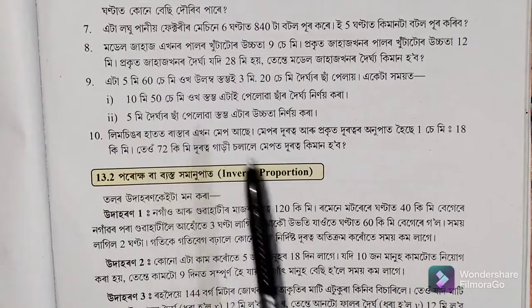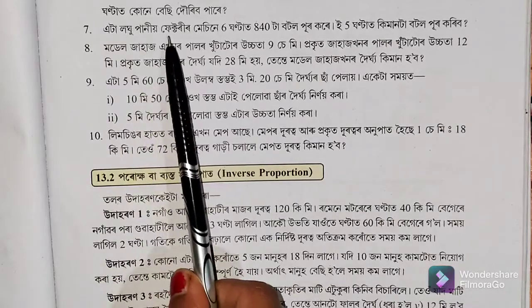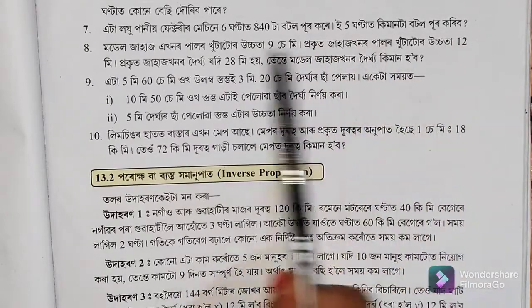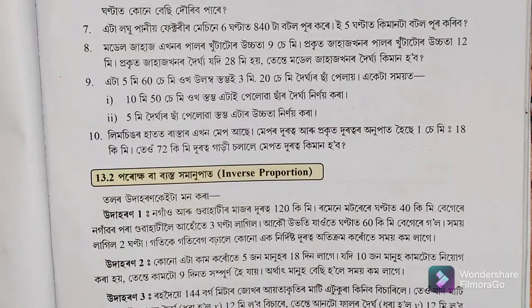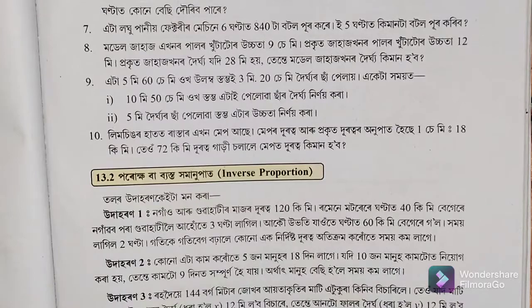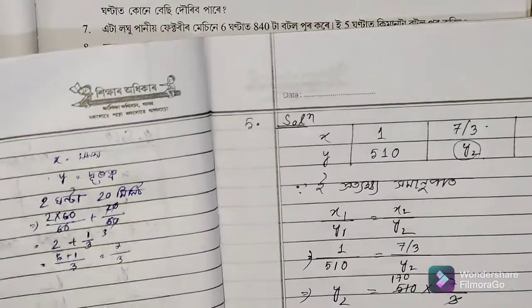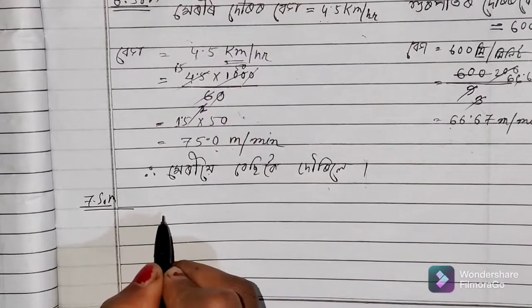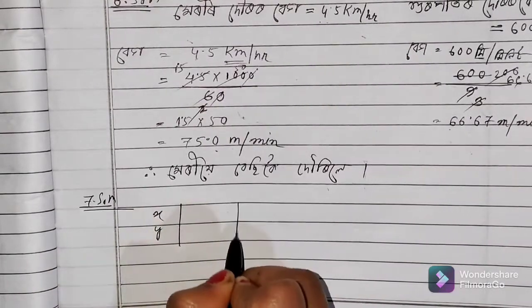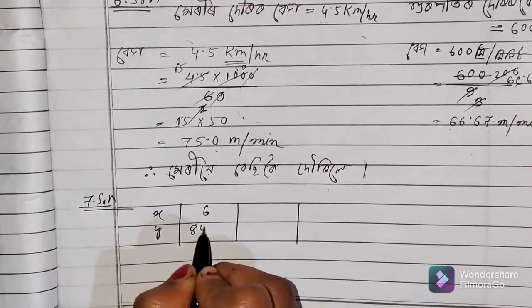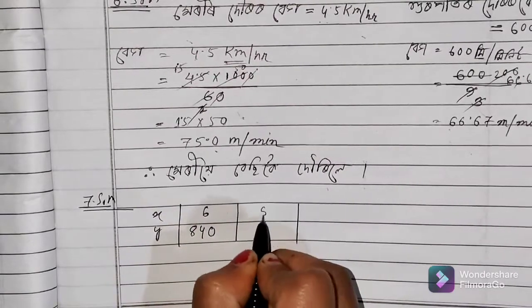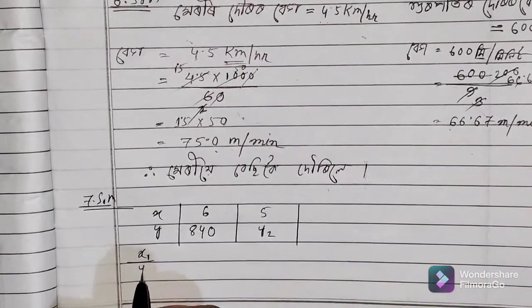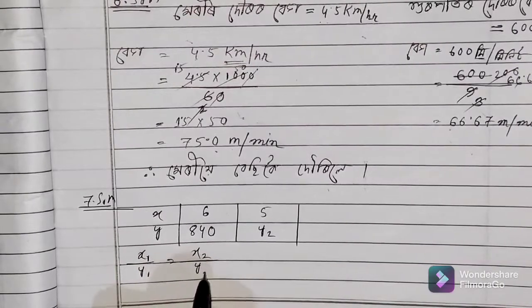The next example means that this factory will be completed in 100 hours and 5 hours. This formula can be completed in 100 hours. Here we see the difference between x and y, specifically x1 divided by y1 and x2 divided by y2.